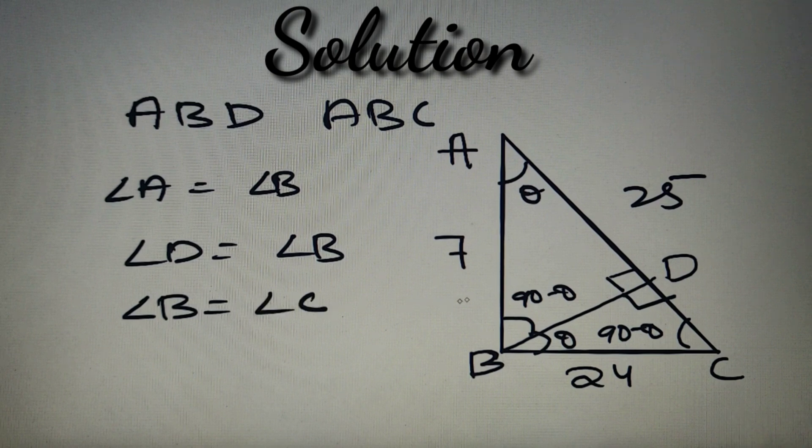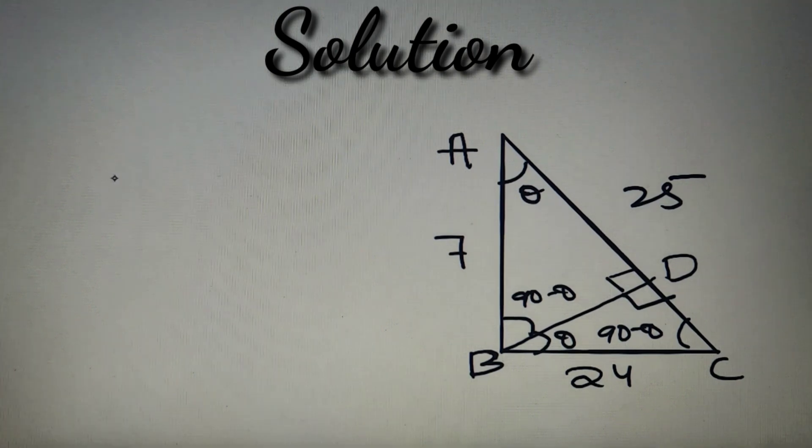We have got angle B equals angle C because they both are 90 minus theta. We have got both these triangles similar by using the angle-angle similarity or triple angle similarity.